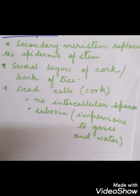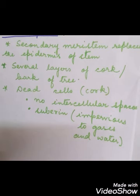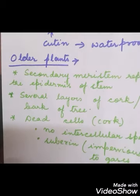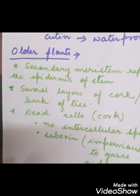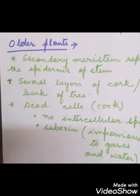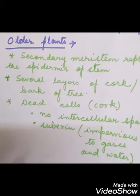Today we have discussed the simplest form of permanent tissue — simple permanent tissue. In the next lecture we will be discussing complex permanent tissue. Please go through the video once to understand each and every point. You can jot down the points from the video. Thank you very much.